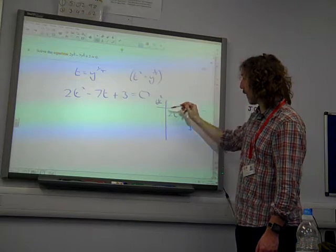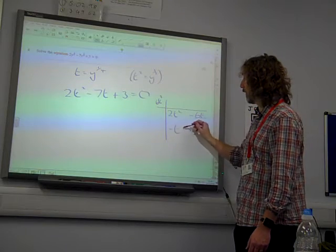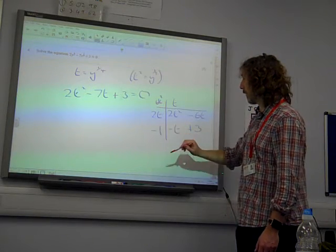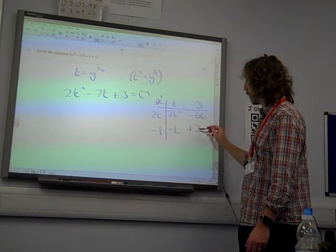That gives me 6t squared, so that's what I need. I need a minus 6t and a minus t. That's 2t as the factor there, t there. That makes that a minus 1, that a minus 3. Minus 3 times minus 1 is plus 3.